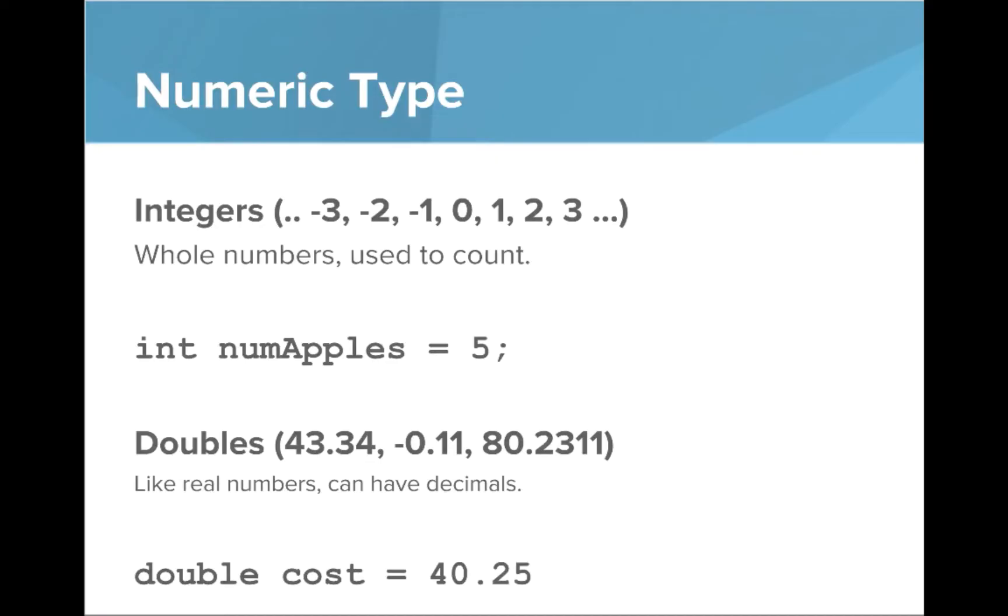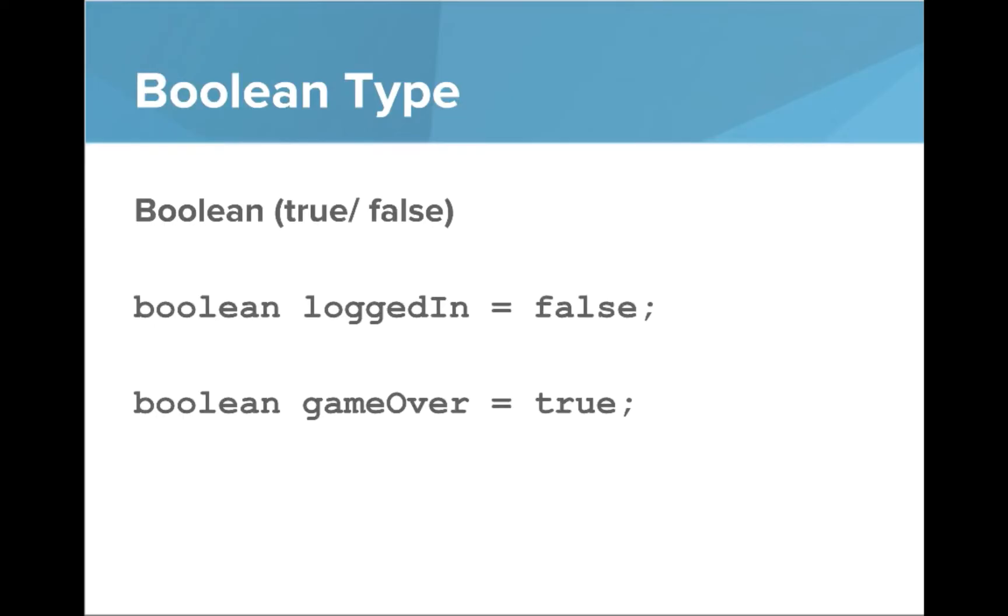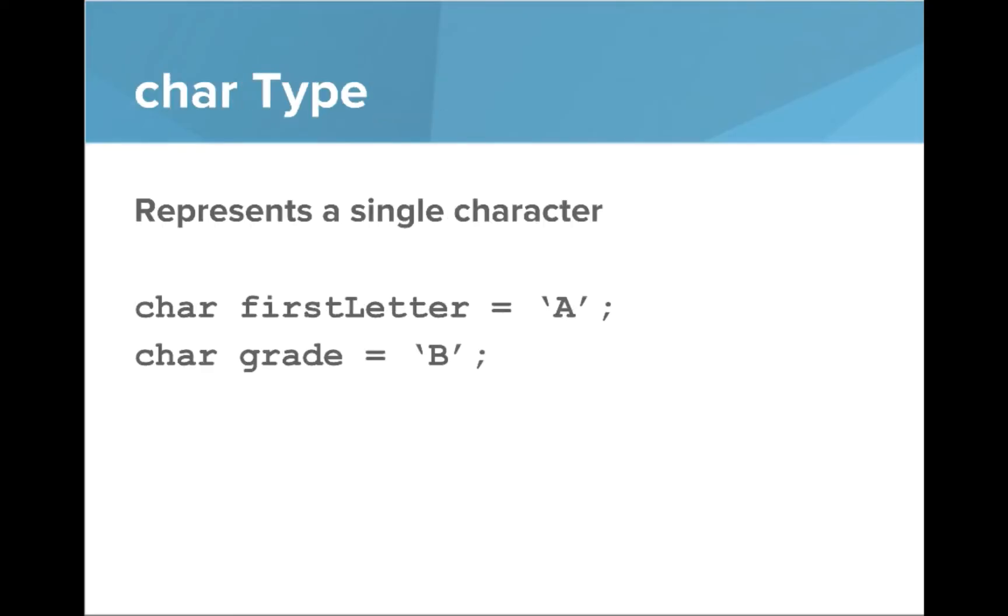Doubles are like real numbers and they can have decimals, for example double cost equals 40.25. The boolean type represents a true/false value, so boolean loggedIn equals false and boolean gameOver equals true. The char type represents a single character, like char firstLetter equals a and char grade equals b. Notice that with chars we're just writing these between single quotes.